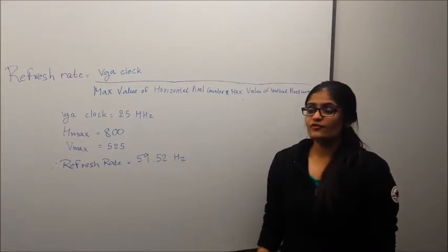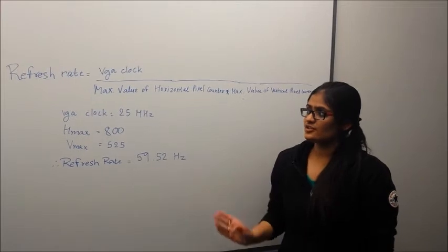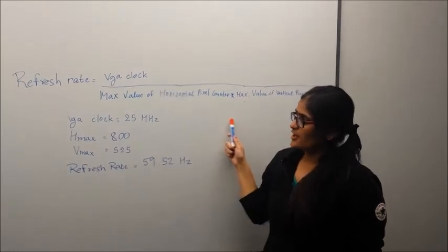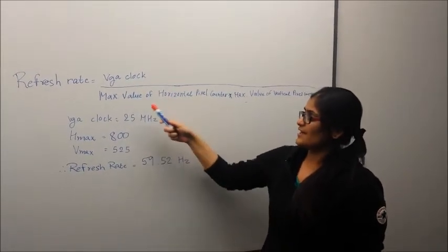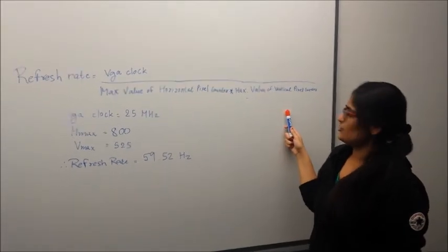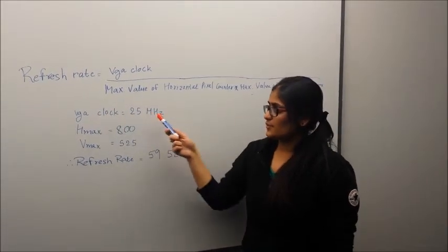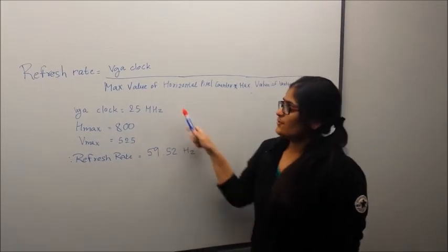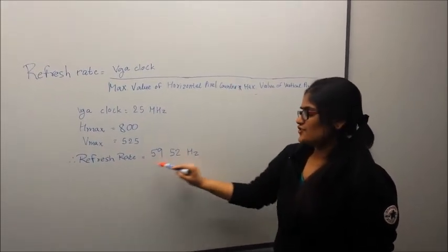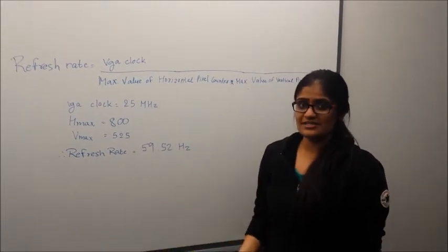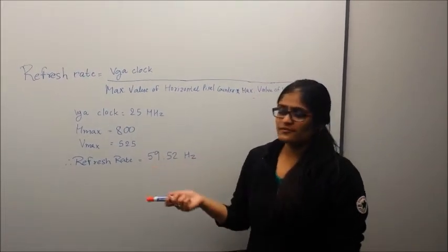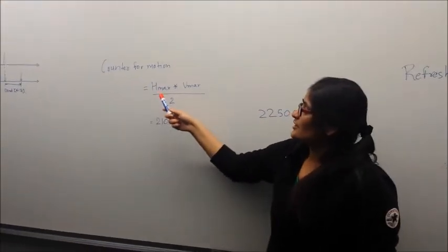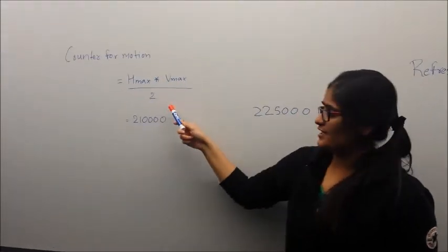I'll talk about the motion of the sprites. For moving the sprites, the motion of the sprites should be synchronized with the screen refresh rate. So how do we calculate the refresh rate? It is calculated by this formula which is given by VGA clock divided by the maximum value of the horizontal pixel counter into maximum value of the vertical counter. The VGA clock is given by 25 MHz and the HMAX and VMAX are given as 800 and 525 respectively. So by keeping these values in this formula we get the refresh rate of 59.52 Hz which is approximately 60 Hz. Now if you want to calculate the counter for the motion, let us go here and see how the counter for the motion is calculated. So the formula is HMAX into VMAX divided by 2.